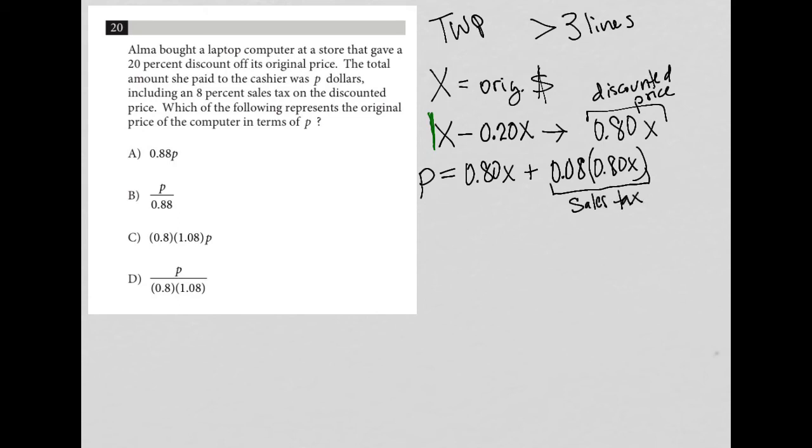And now I'm going to simplify this equation. So we have P equals 0.80X plus, if we throw this sales tax calculation into our calculator, what you get is 0.064X. We simplify that further, and we find out that the total price that Alma paid was 0.864 times that original price.